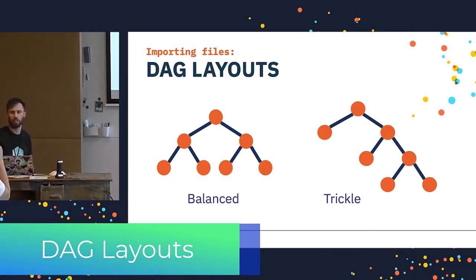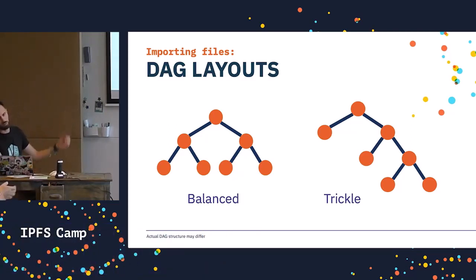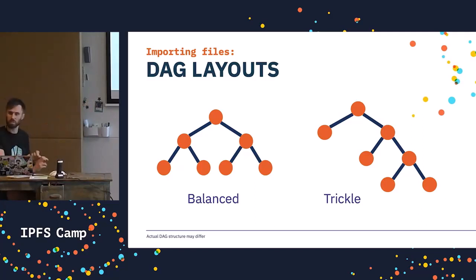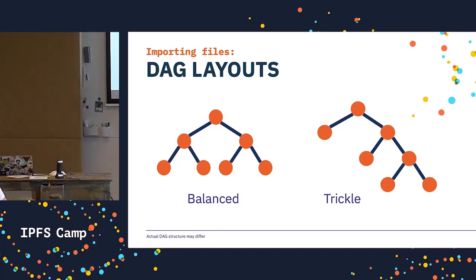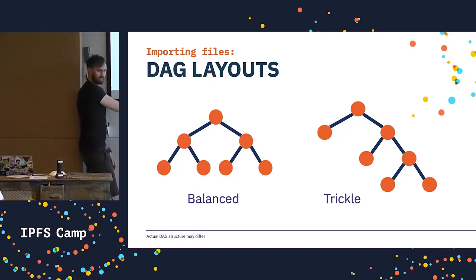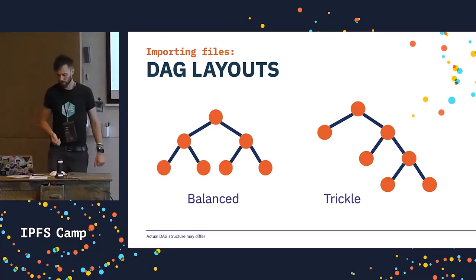There are also different graph layouts with different performance characteristics. Balanced layout is the default when you run 'ipfs add' — it's simple to build and easy to traverse, but difficult to edit. If you change the middle, you'd have to do a lot of rebalancing. Trickle is another option — more difficult to build but great for streaming, because the time to first byte is much less. With a balanced DAG on a big movie file, you'd have to traverse several nodes before you can start streaming. With a trickle-style DAG, the time to first byte is much better.